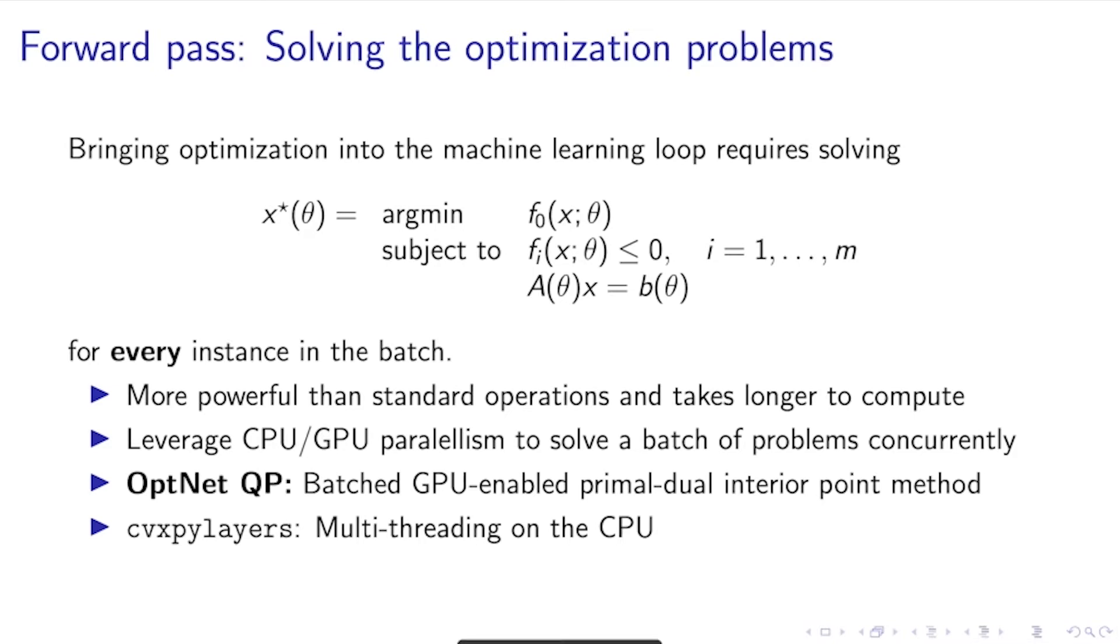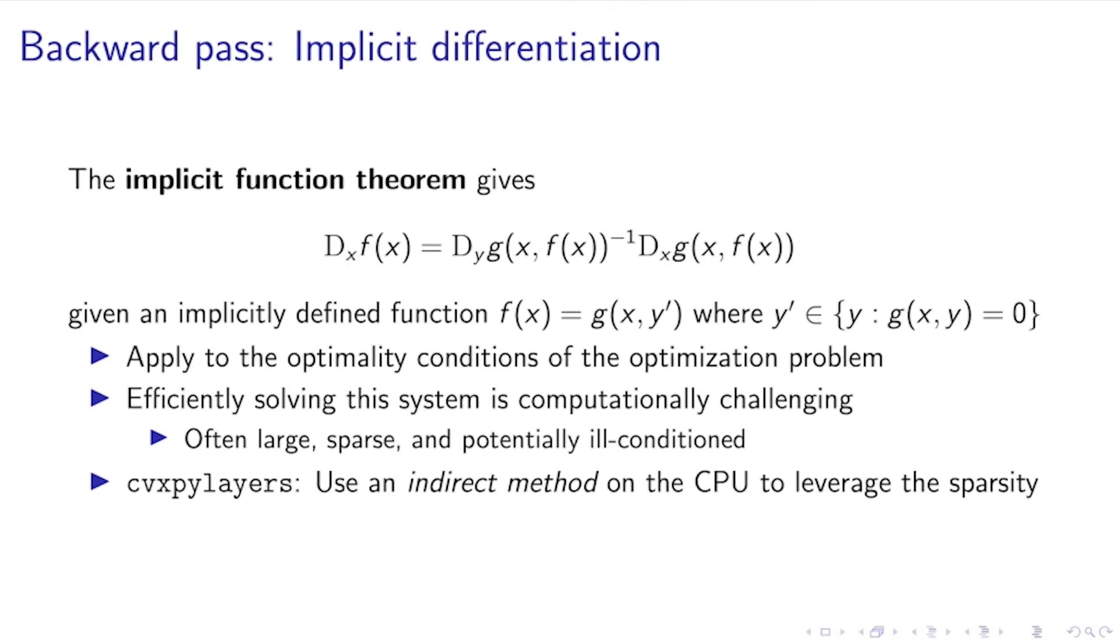Now that we've talked about the forward pass, we'll move on to some of the implementation considerations in the backward pass. The key modeling method that we use in the backward pass is implicit differentiation. By the implicit function theorem, this requires solving linear systems of the form that I have on the slide, where we have some implicitly defined function f, and we care about differentiating through this with respect to f, given that it's implicitly defined by the zero points of this other function g.